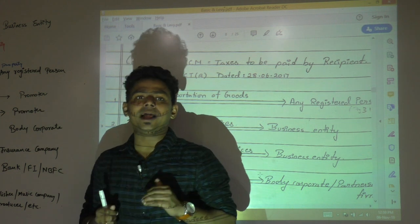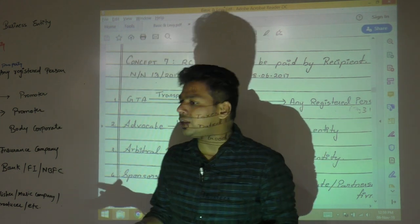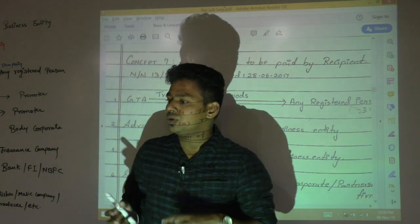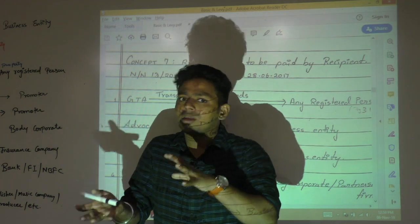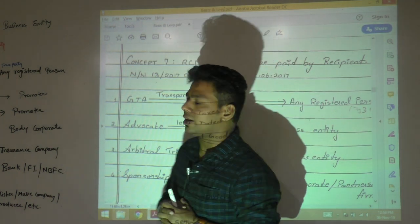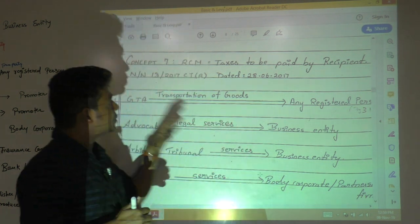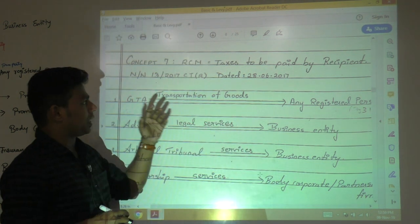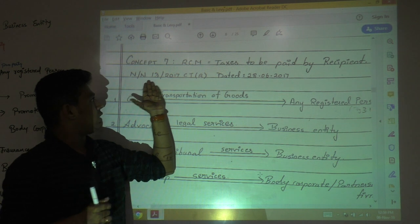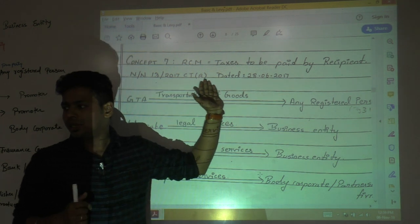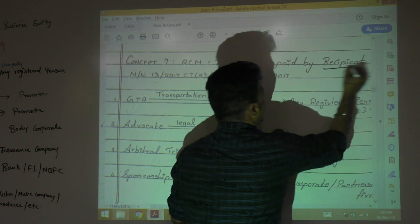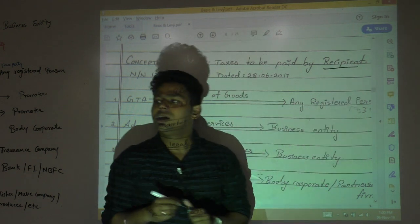We cannot memorize who is in forward charge because everybody is in forward charge by default. So we memorize who is in reverse charge. Therefore we are discussing reverse charge mechanism. The first point of reverse charge mechanism is given in Notification Number 13/2017. This notification you need to remember. And here tax will be paid by the recipient.